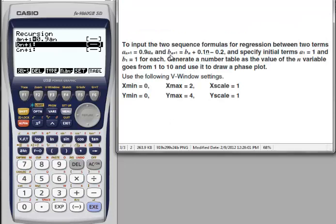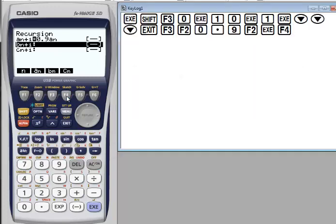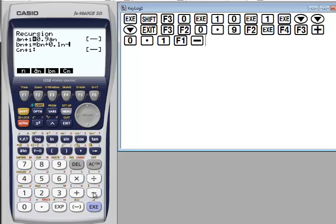B sub n plus 1 equals b sub n plus 0.1 times n. Press F4, then press b sub n, F3 plus 0.1 times n minus 0.2, execute.